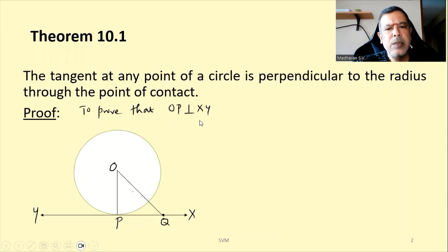So if I have to prove OP is perpendicular to XY, then any other point on this XY should be larger than OP. I need to prove that OP is the shortest. So let us consider some point Q on this XY. Then let us draw OQ. Now we may clearly notice that OQ is greater than OP. This is applicable for any point we put on XY apart from P. That means we can say that OP is the shortest, which means that OP is perpendicular to XY. So that is the proof of this theorem.